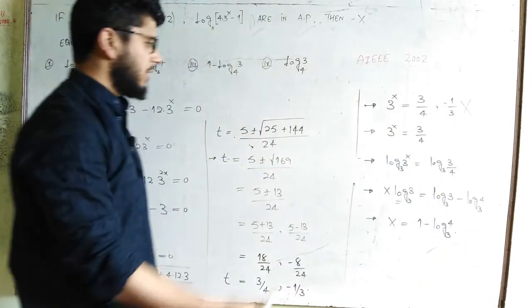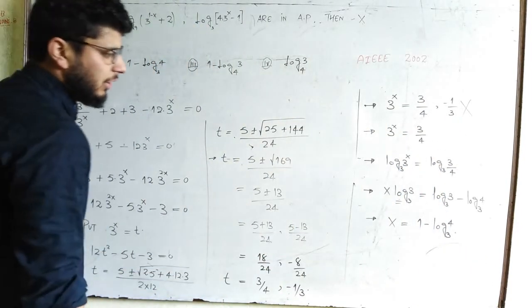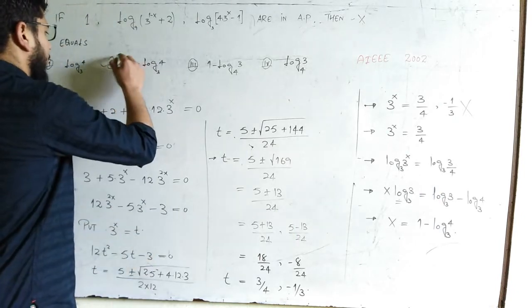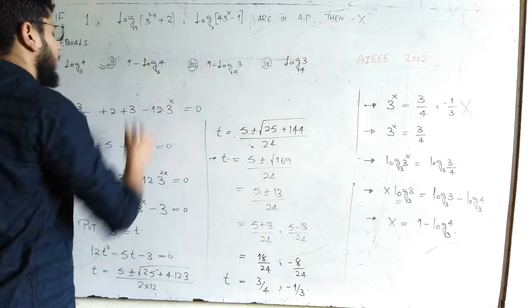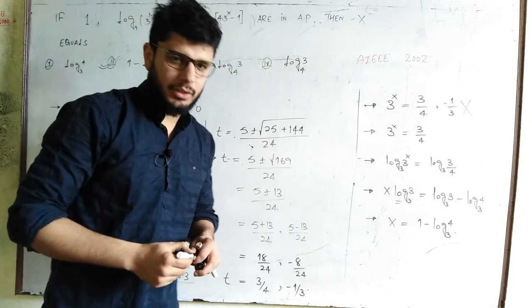So the detailed solution gives x = 1 - log₃(4). Option number two is correct.